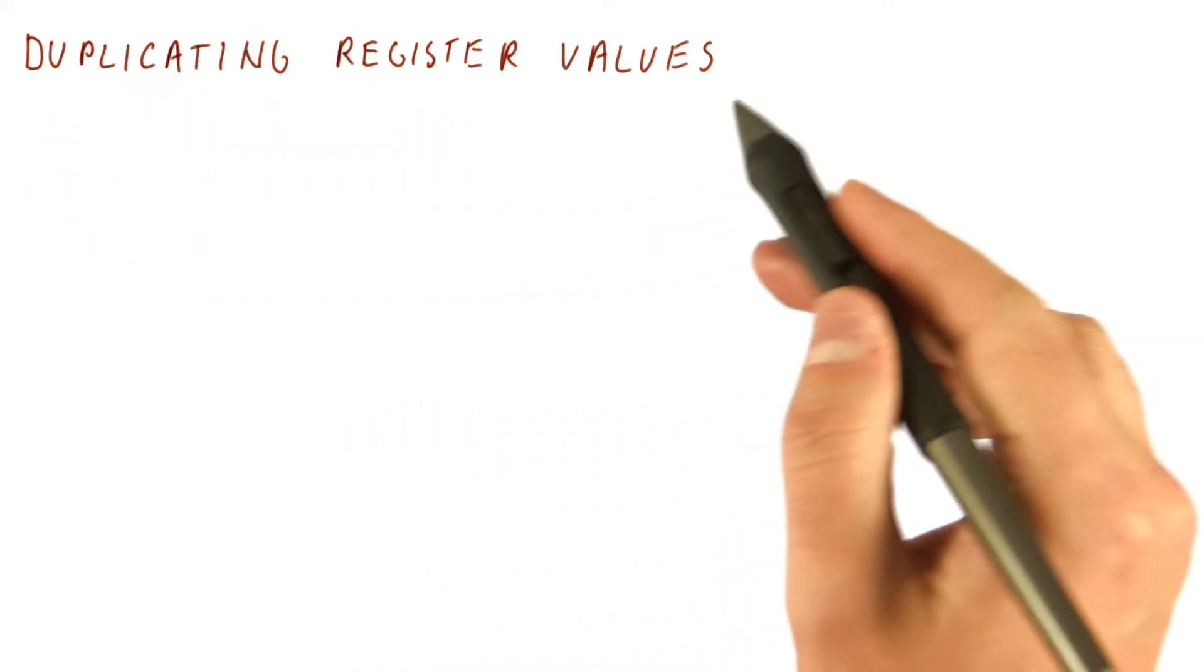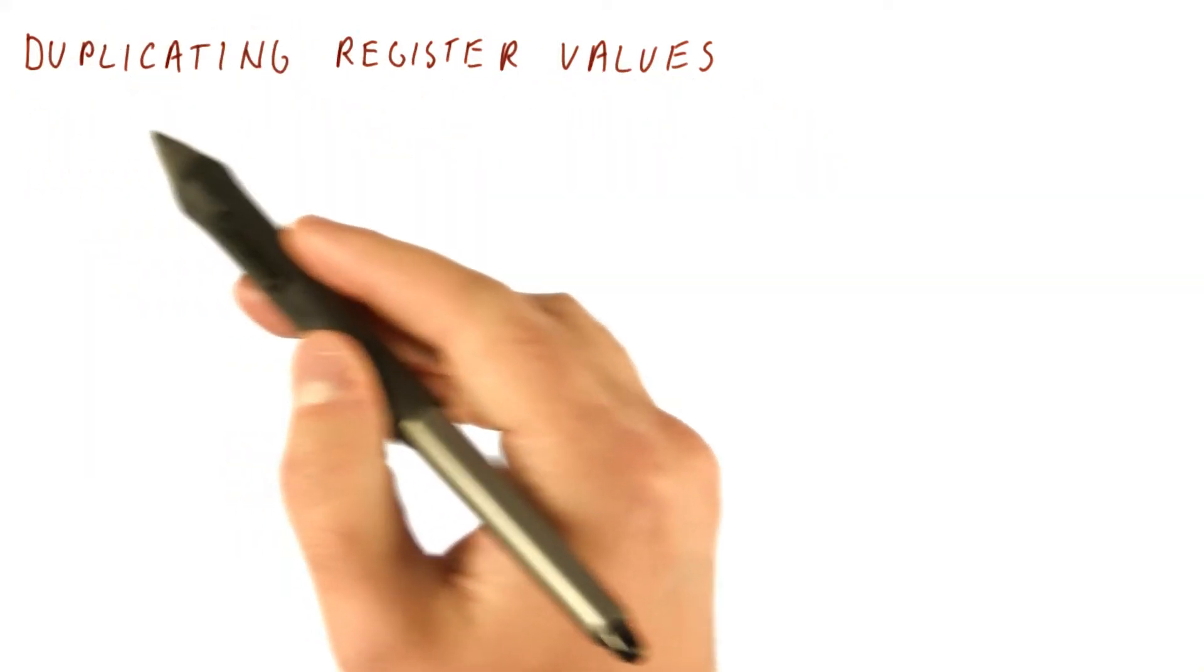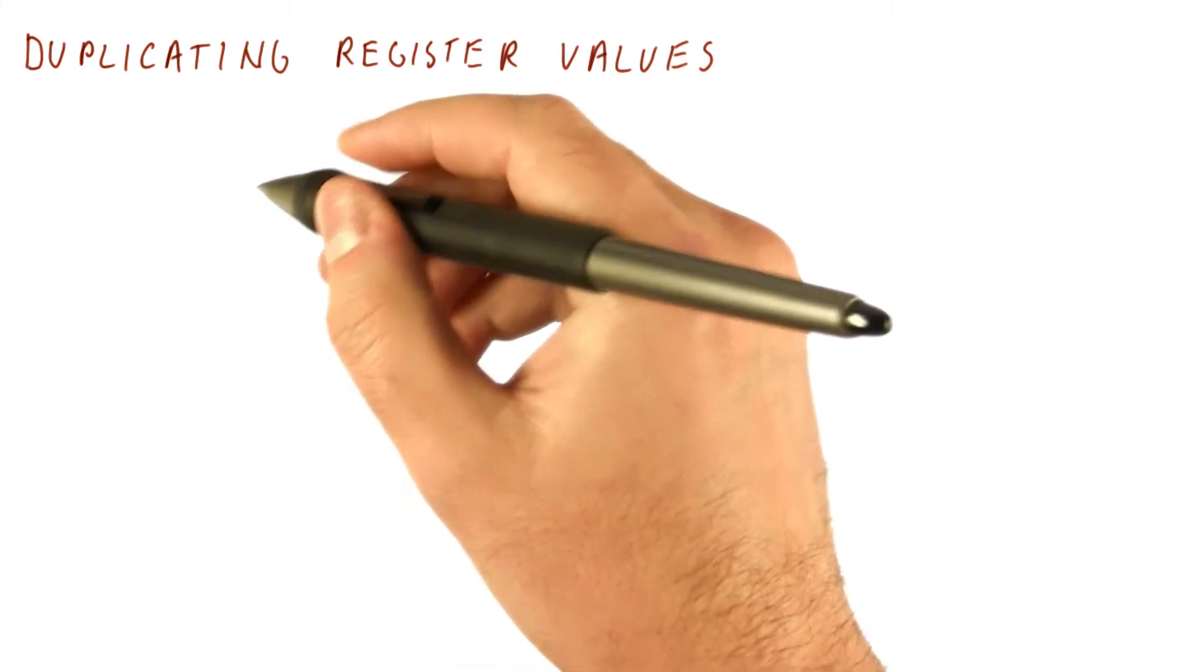So one of the approaches for eliminating false dependencies is to duplicate register values. Let's see how that would work.